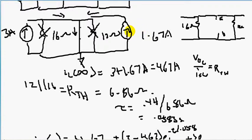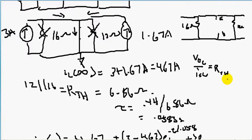We zero out current sources by opening them, and we short voltage sources. Now that we open these two current sources, what's the resistor seen from A to B? From A, you have the 16-ohm resistor and this 12-ohm resistor in parallel. That's how I got the 12 in parallel with the 16, and that's how we found R_th.